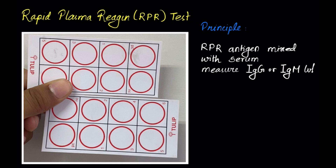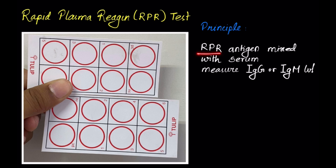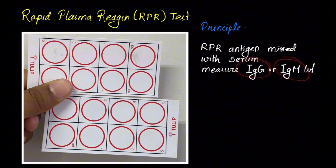Another type of test is the rapid plasma reagin or RPR test, in which RPR antigen is mixed with serum, placed on a card, and the level of IgG and IgM antibodies against the disease is measured. It is usually used for rapid testing of syphilis.